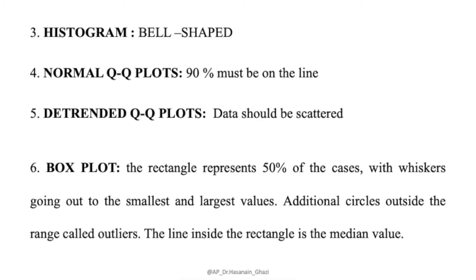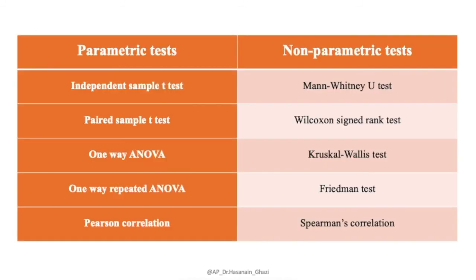If the variable is normally distributed, use the t-test. If not normally distributed, the non-parametric equivalent to the independent t-test is the Mann-Whitney test. For the paired t-test, the equivalent is the Wilcoxon signed-rank test. For one-way ANOVA, use the Kruskal-Wallis test. For one-way repeated ANOVA, and for Pearson correlation, the non-parametric equivalent is the Spearman correlation.